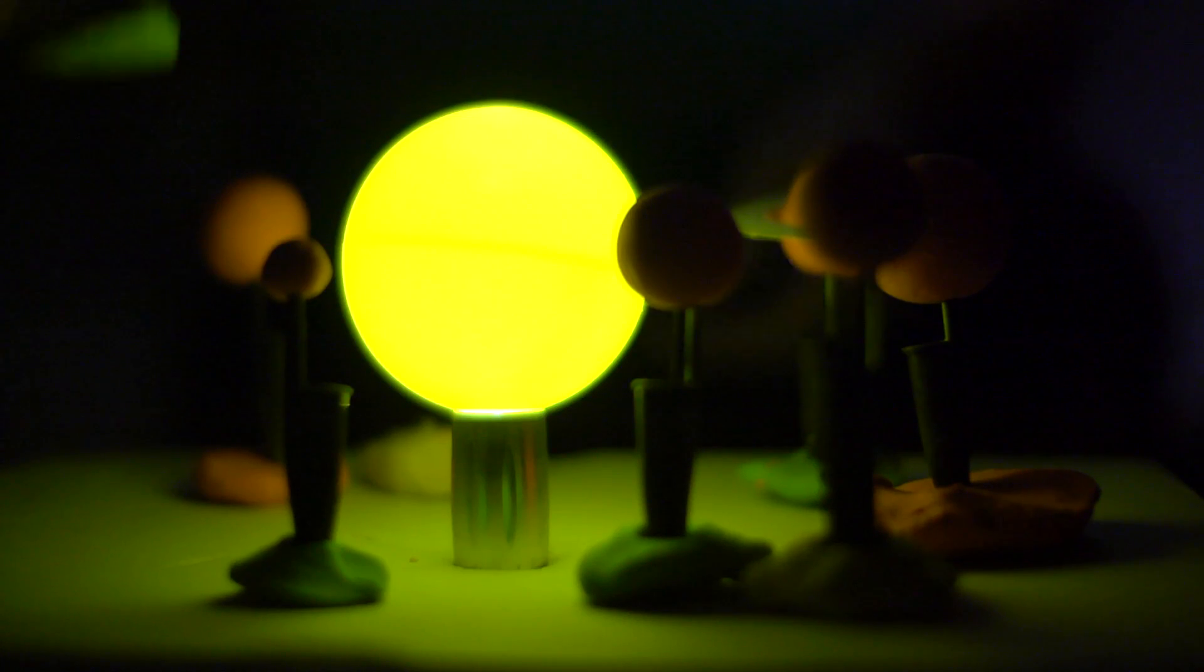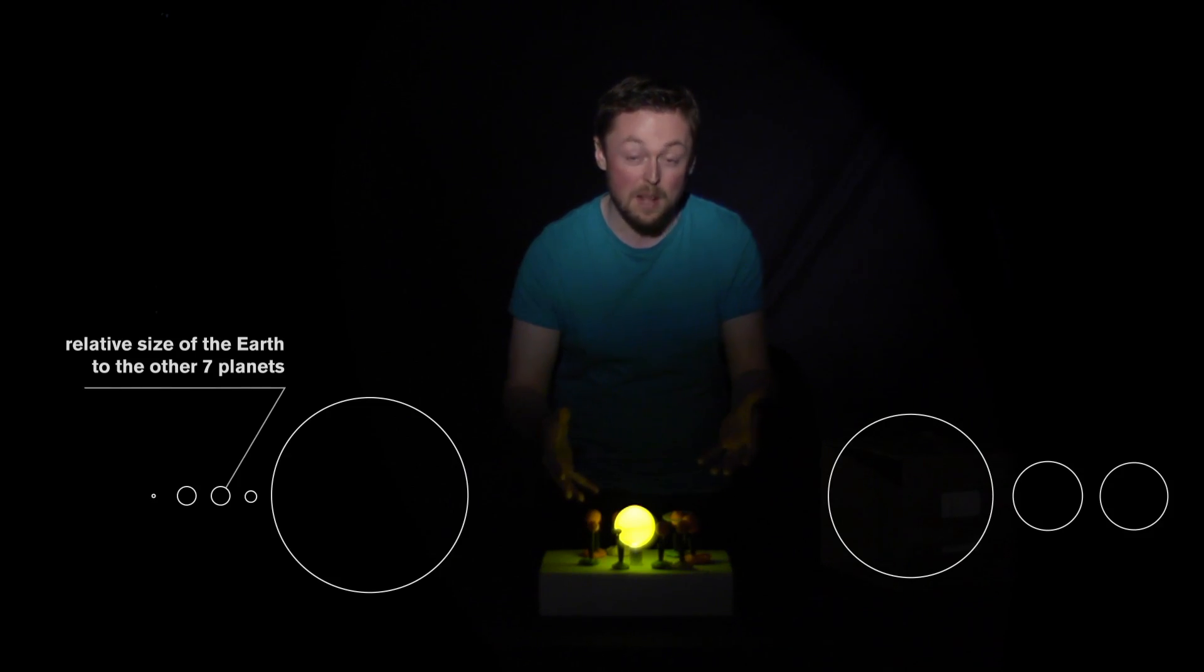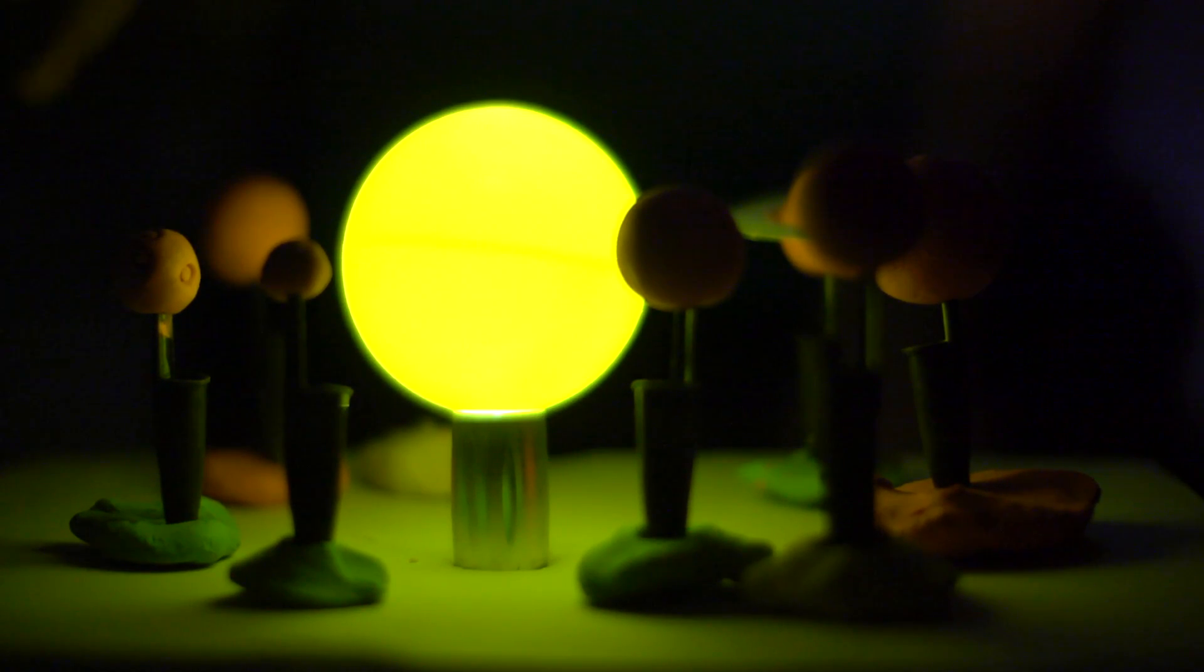For our solar system in a box, here you see that the planets are not to scale in their size or distance, but we do have four rocky planets and four gas giants.